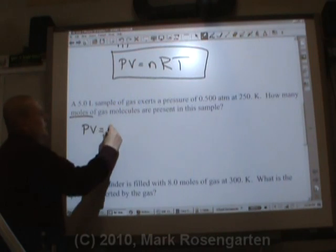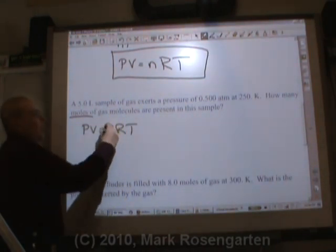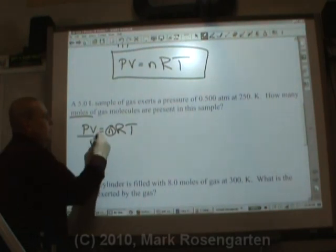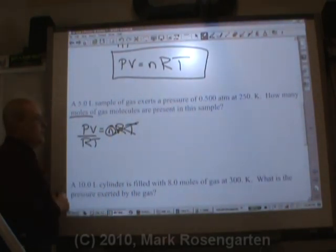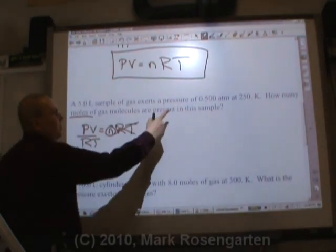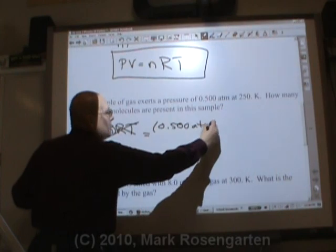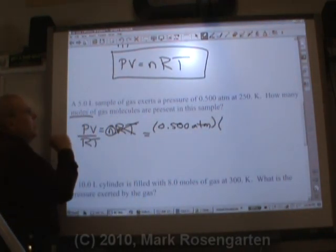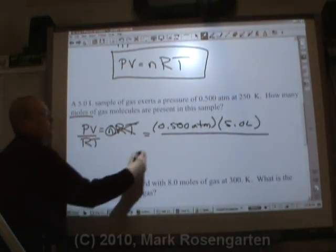So PV equals NRT and we're trying to find out how many moles of gas molecules. So divide both sides by RT. PV over RT equals N. Let's plug them in. We've got atmospheres, great. 0.500 atm. The volume is 5.0 liters.